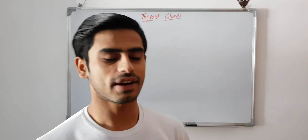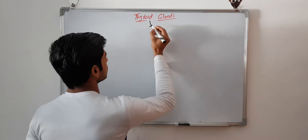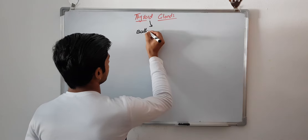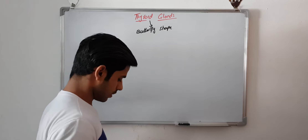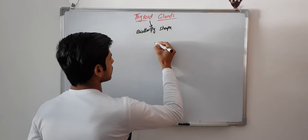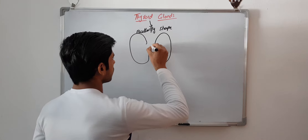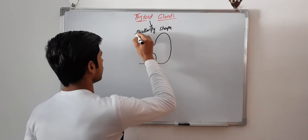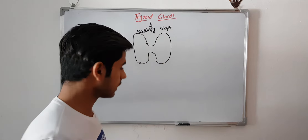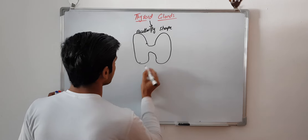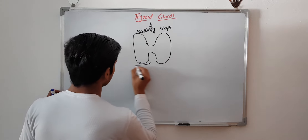Hi guys, today our discussion is about the thyroid glands. Thyroid glands are the butterfly-shaped glands. We will sketch its structure something like this. These glands have two kinds of cells.